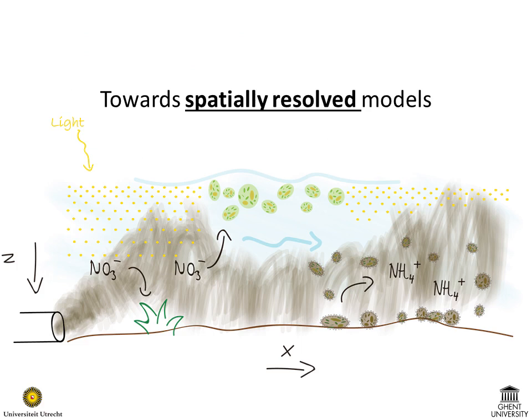Until now, we have ignored the spatial context in our models. Instead, we assumed that the system components described by state variables were homogeneously distributed in space. This made our model less realistic, as transfer of mass and energy in space is clearly an important part of how real systems work.